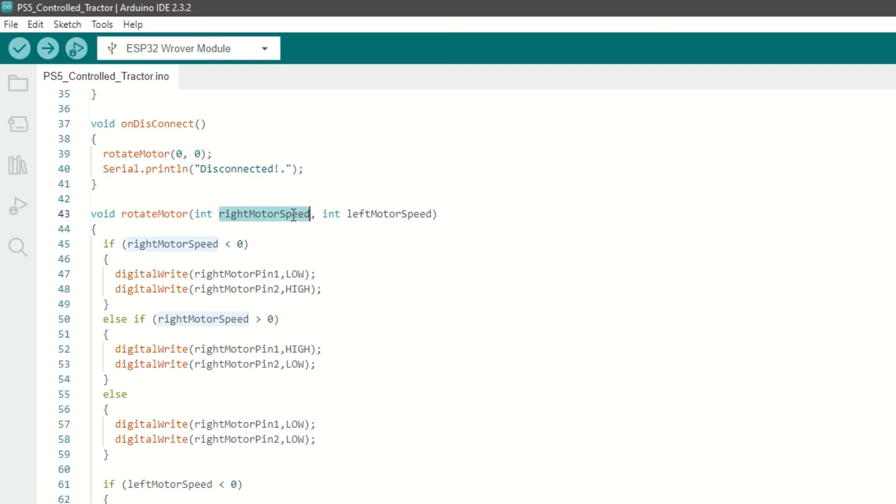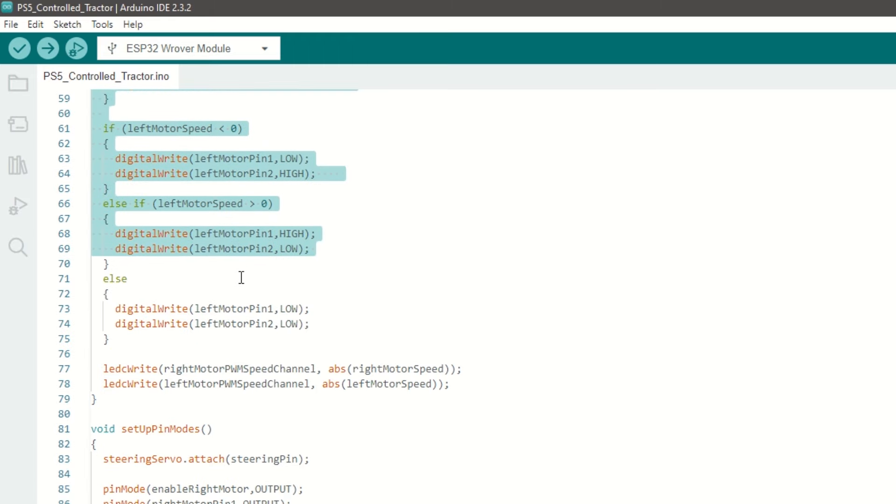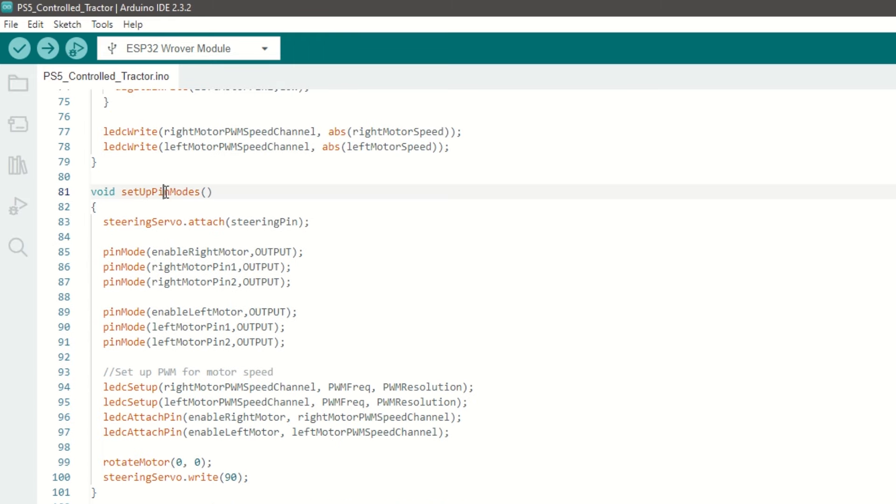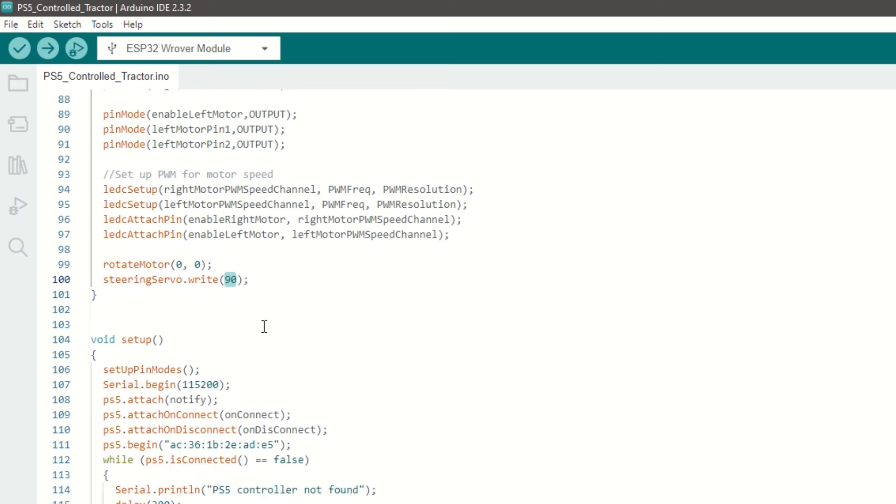We have created rotate motor function which takes right and left motor speed as arguments. It will rotate the motor in forward or backward direction. We have created setup pin mode function to attach the servo pin, set the motor pins as output, and set the PWM channel for speed control. Initially stop all the motors and set the servo initial position to center.